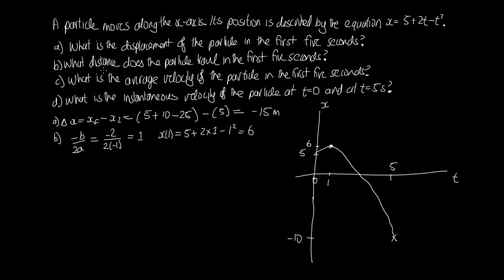In the first second the particle travels one meter in the positive x direction, from five meters to six meters. Then in the following four seconds it travels from six meters down to minus ten meters, a distance of sixteen meters. So the total distance is one plus sixteen, which equals seventeen meters. Remember distance is a scalar so we don't need to give a direction.